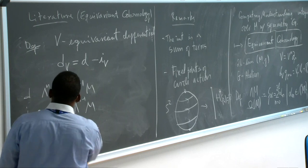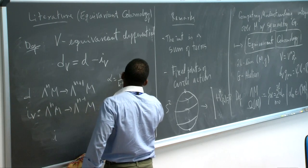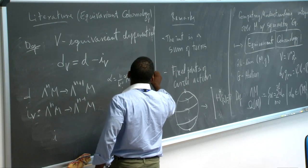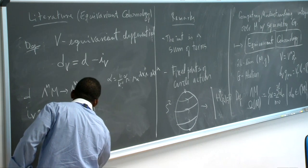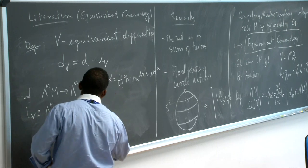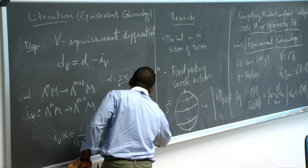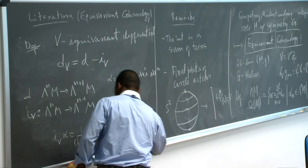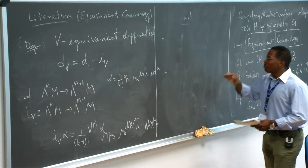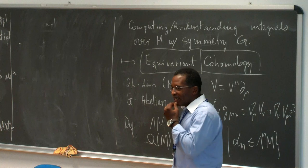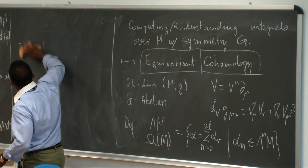Let me remind you: if I have a form α equal to (1/k!) α_{μ₁…μ_k} dx^{μ₁} ∧ … ∧ dx^{μ_k}, then i_V of α equals (1/(k−1)!) V^{μ₁} α_{μ₁μ₂…μ_k} dx^{μ₂} ∧ … ∧ dx^{μ_k}. I'm close to having my differential. I need to show it satisfies nilpotency — I can then define cohomology.